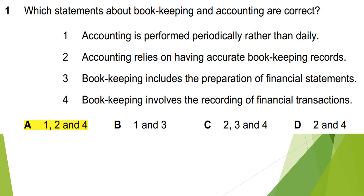Option 2: accounting relies on having accurate bookkeeping records — if bookkeeping is done correctly, we can make correct financial statements at year end. Option 3: bookkeeping includes the preparation of financial statements — this is incorrect, because bookkeeping does not include financial statements; that is accounting. Option 4: bookkeeping involves the recording of financial transactions — this is correct. So options 1, 2, and 4 are correct; option A is the answer.